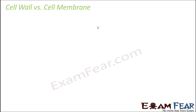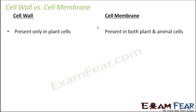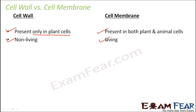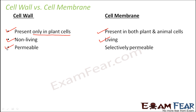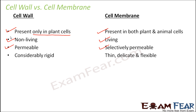Now let us quickly compare the cell wall with cell membrane. First, cell wall is present only in plant cells, but cell membrane is present in both plant as well as animal cells. Cell wall is not living, but cell membrane is living. Cell wall is fully permeable — it allows everything to pass across it — but cell membrane is selectively permeable, allowing only selective substances according to the concentration gradient. Cell wall is rigid, while cell membrane is thin, delicate, and flexible.